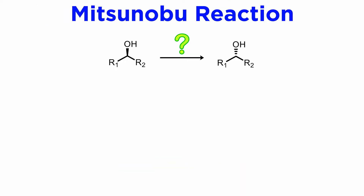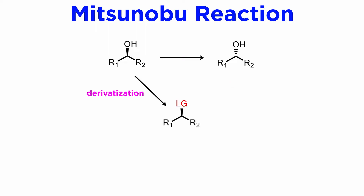Suppose you have a chiral secondary alcohol and you need to invert the stereochemistry. For example, let's say that you have the S configuration but you want the R. One approach would be to derivatize the starting alcohol and make the hydroxyl a good leaving group, doing so with retention of configuration. In a second step, you would introduce an oxygen-based nucleophile and promote an SN2 reaction, achieving the consequent inversion. The most practical way to do this today is the Mitsunobu reaction.